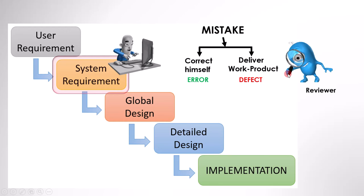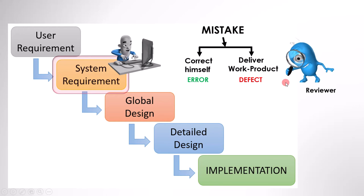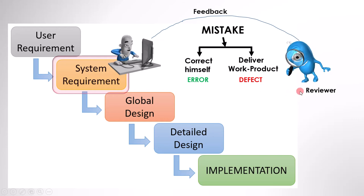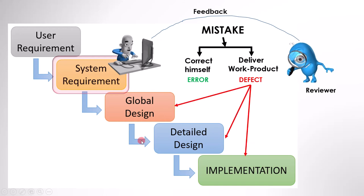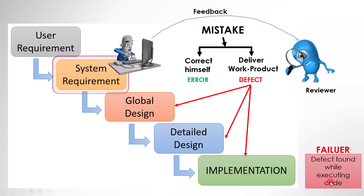Most of the time these defects are found by the tester or reviewer during the review process, and the requirement engineer corrects the mistake. But if the requirement document is not reviewed, or if the reviewer could not find these defects, then the defects will be introduced to all the below stages, and finally the implementation will be wrong. If the implementation is wrong, the delivered software will also have this defect. Now if the defect is found by the tester or the user while executing the code, it will be referred to as a failure.